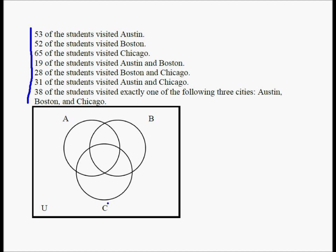Let's make sure we understand: 53 students visited Austin. The four numbers in the Austin circle should add up to 53. Don't put 53 in just one region — that would be incorrect. 53 is the sum of those four numbers.